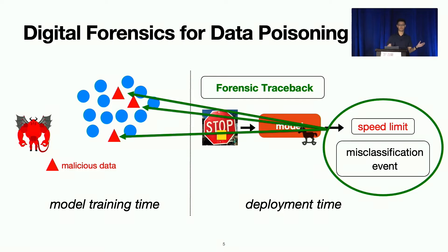I want to emphasize that this is different from poison defenses. Again, defense tries to prevent the attack before it even happens. But forensics tries to handle the post-mortem analysis of already happened attack, to analyze who is the attacker, what went wrong, how can we prevent it in the future?